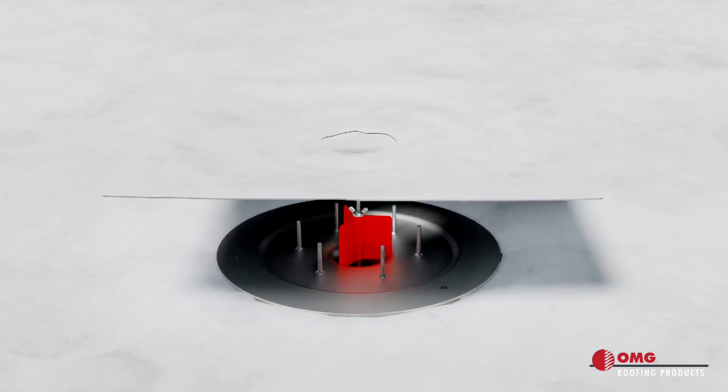The flashing membrane must cover and extend past the drain flange. Install per roof membrane manufacturer's requirements.